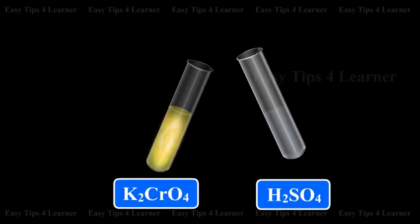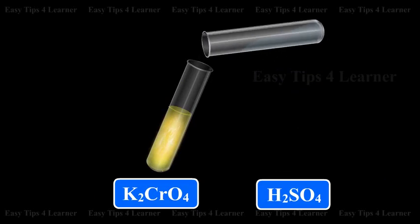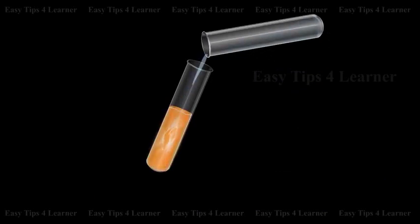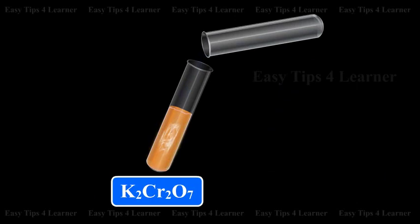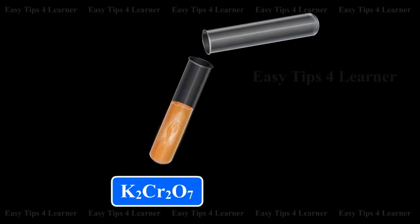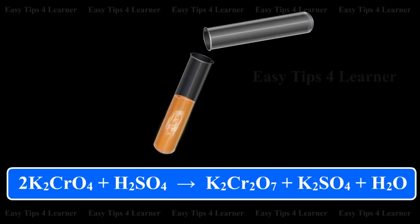On acidifying, the yellow color of potassium chromate again changes to orange-red due to reformation of potassium dichromate. 2K2CrO4 + H2SO4 gives K2Cr2O7 (orange-red) + K2SO4 + H2O.